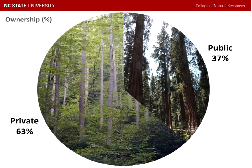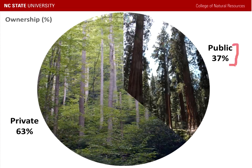We can break up ownership into two general categories: public ownership and private ownership. Public ownership includes things like federal, state, and local governments, where private ownership includes family forest owners, corporate owners, and what is often referred to as other private owners. In the United States, roughly a third of the land is under public ownership, and almost two-thirds is in private ownership. Private ownership can be broken down into family forest owners, corporate owners, and other private.